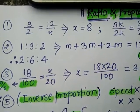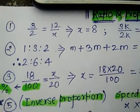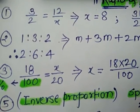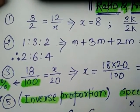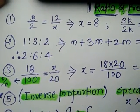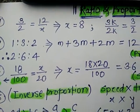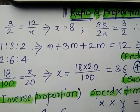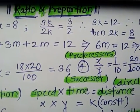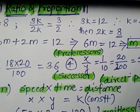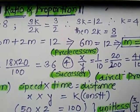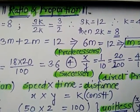So now 3/2 is equal to 12/X. In this ratio proportion we can find out X is equal to 8. I will multiply 3/2 by K, so 3K is equal to 12, then K is equal to 4, and therefore 2K is equal to 8.